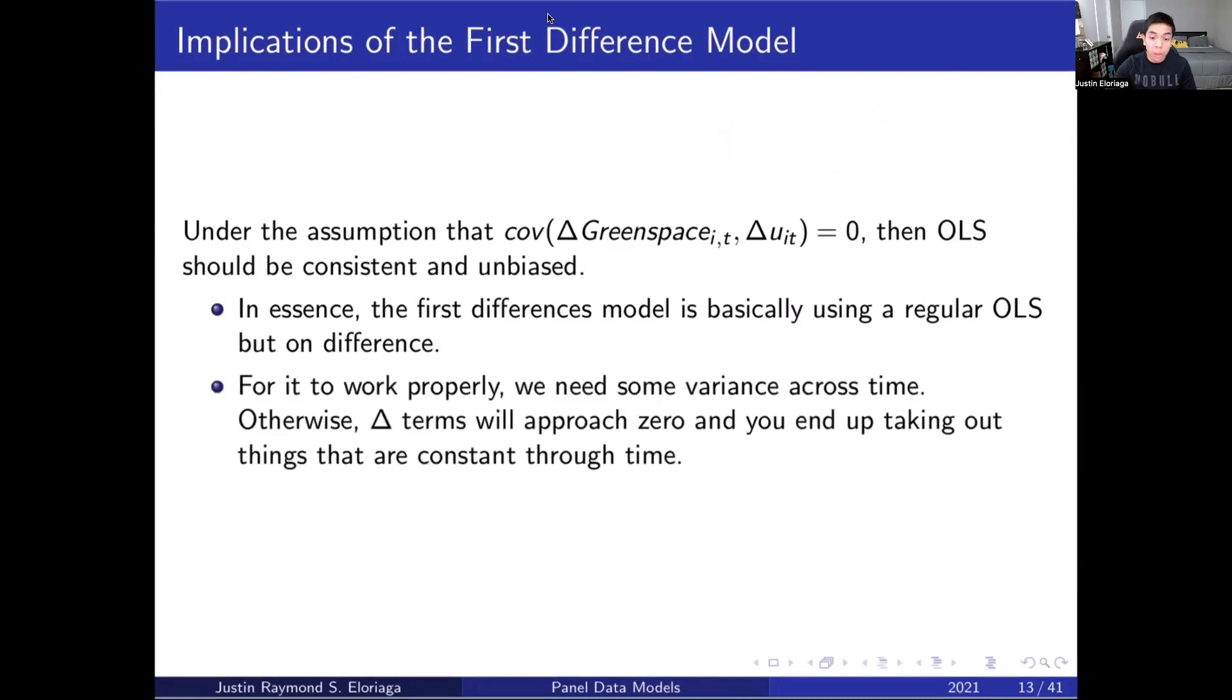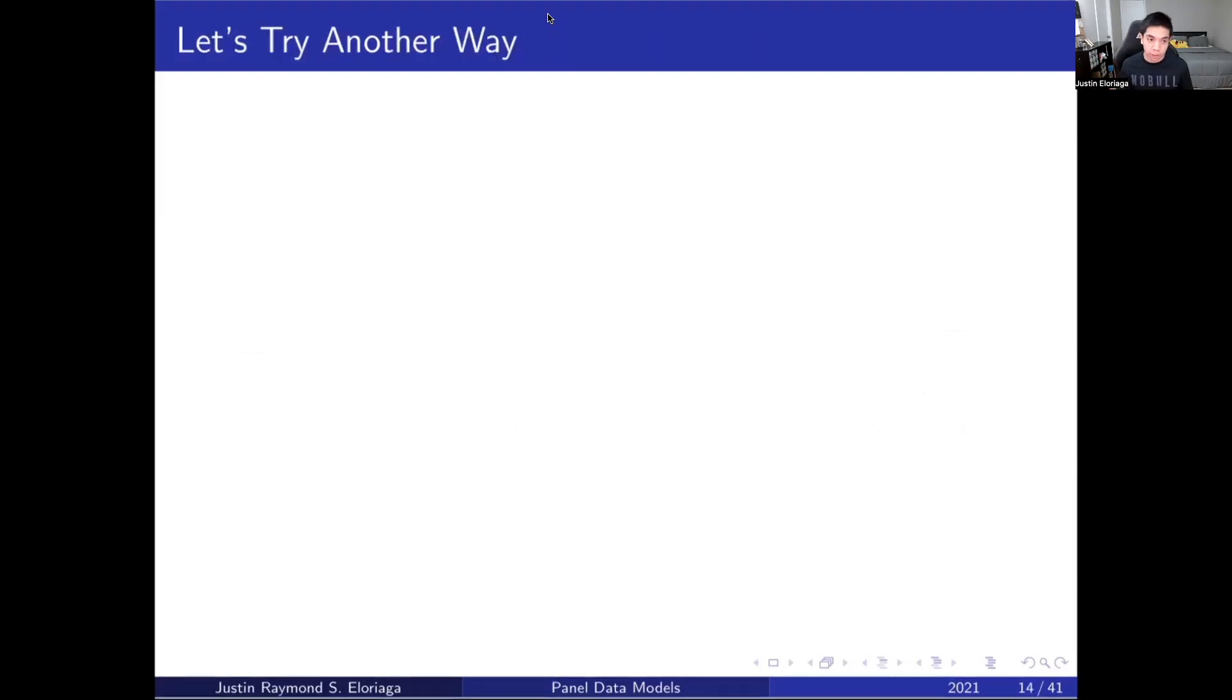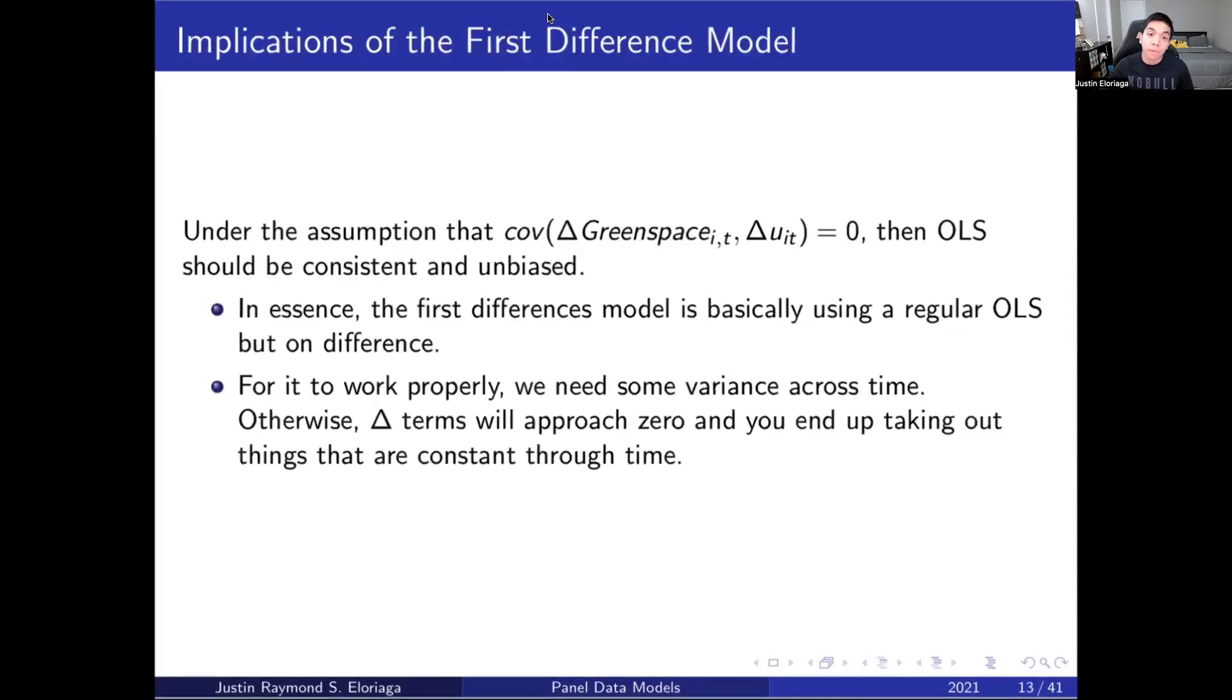Now, for it to work properly, we need some variance across time. Otherwise, those difference terms will tend to approach zero, and you end up taking out things that are constant throughout time, which is sort of a bad thing. So you need some difference across time, otherwise those difference terms will just be zero. That's a first pass at it, and I think it's a pretty good first pass. What we're going to do now is try to run it and see how it looks like in Stata.